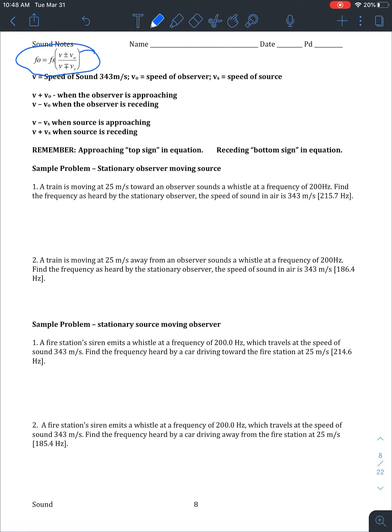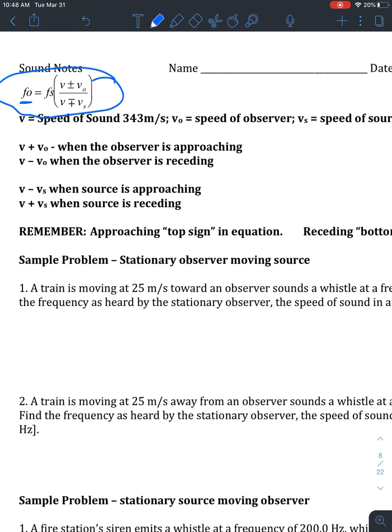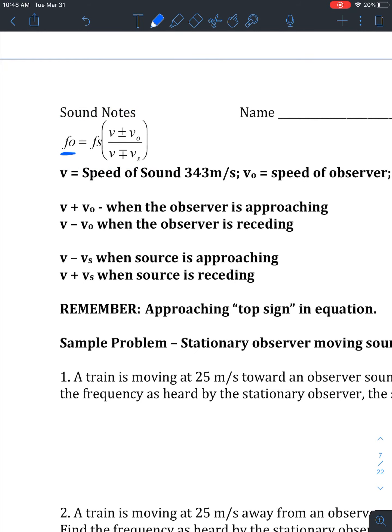So just a couple things here. It does say it in the notes here. FO, O meaning the observer. And FS, S meaning frequency of the source. These V's here are the speed of sound. So we're going to use speed of sound usually unless given otherwise as 343 meters per second. Our VO is the velocity of the observer, whoever or whatever is hearing the sound. And then VS is the velocity of the source, whatever is making the sound.